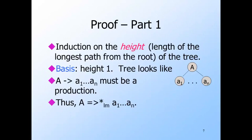We'll start with point one by showing how to convert parse trees to leftmost derivations. The proof is an induction on the height of the tree. The basis is height one — a tree consisting of a root labeled by some variable A and one or more leaves. There must be a production with head A and body being the labels of the leaves from left to right, say a1 through an. Then A derives the yield of the tree by a one-step leftmost derivation in which this production is used.